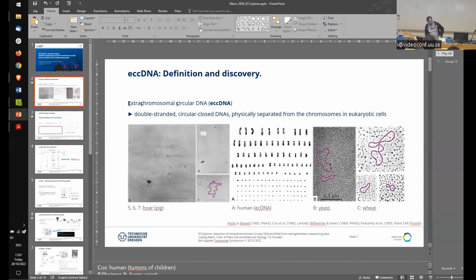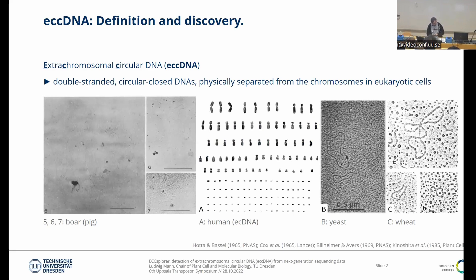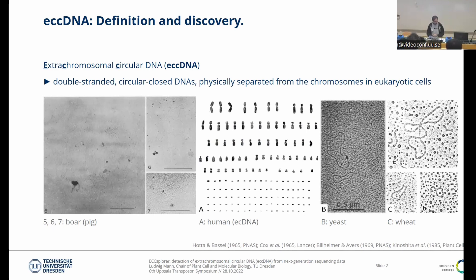First I want to jump into where eccDNAs came from and when they were first detected. EccDNA has been known for quite a while — they were discovered about 50 years ago using electron microscopy. You can see in the pictures that they are circular — they really do exist, they are not just made up by some pipeline. I've marked some of them here so you can see them better.